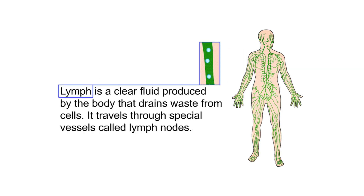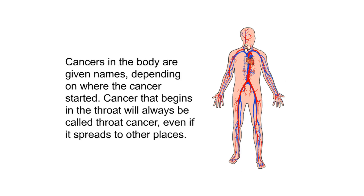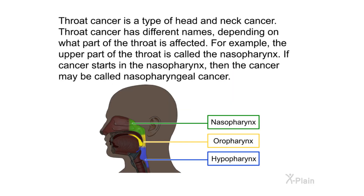Cancer cells spread to different parts of the body through blood vessels and lymph channels. Lymph is a clear fluid produced by the body that drains waste from cells; it travels through special vessels called lymph nodes. Cancer that moves from one tissue to other body parts is known as metastatic cancer. For instance, a throat tumor may grow through the outer layer of the throat and into nearby tissues. Cancer that begins in the throat will always be called throat cancer, even if it spreads to other places.